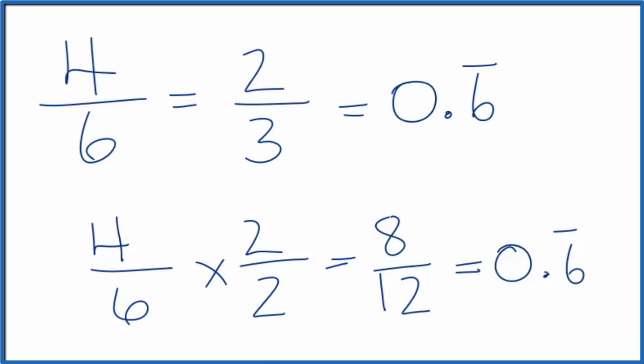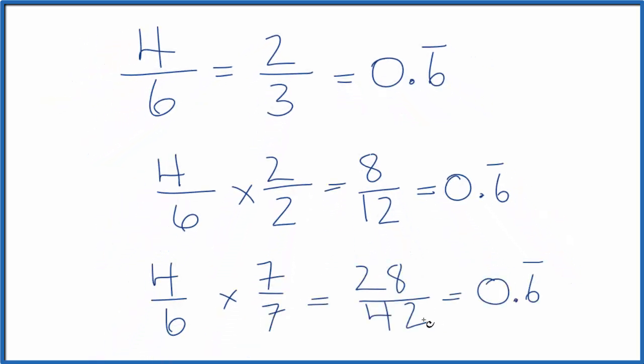Let's do one more. Let's say four sixths times seven over seven. And again, because we're only multiplying by one, we end up with another equivalent fraction for two thirds, or four sixths.